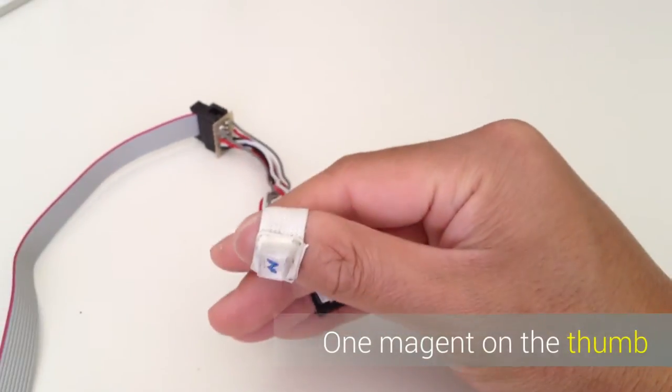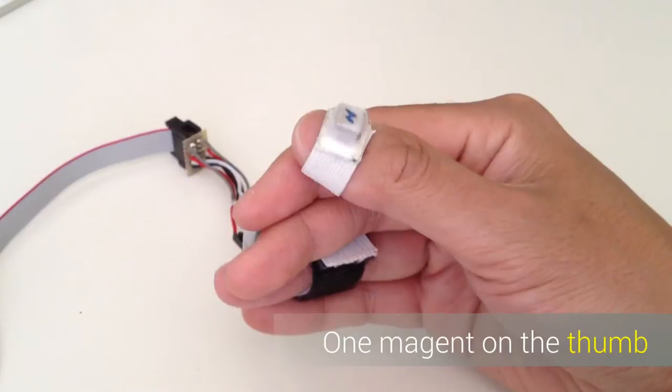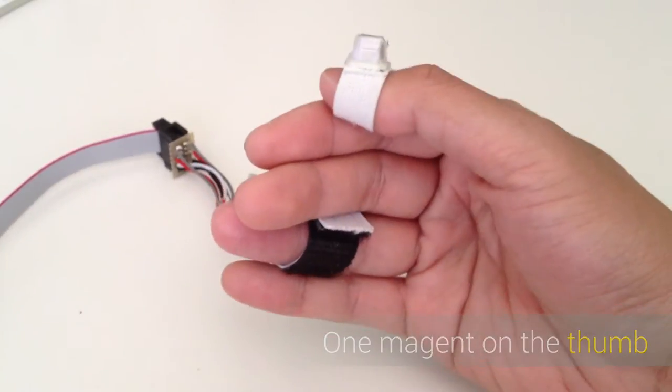We introduce U-Track, a novel technique that turns the thumb into a 3D pointing device using magnetic field sensing.